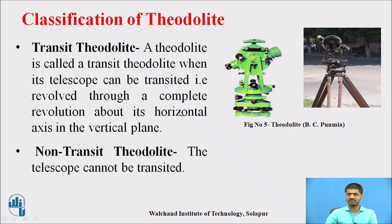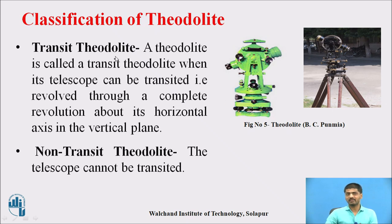A theodolite is called a transit theodolite when its telescope can be transited — that is, revolved through a complete revolution about its horizontal axis in the vertical plane. A non-transit theodolite means the telescope cannot be transited; it cannot revolve through a complete revolution about the horizontal axis in the vertical plane.